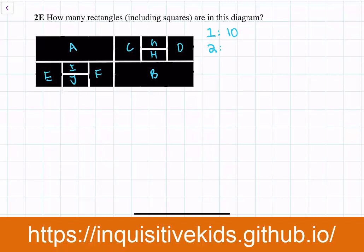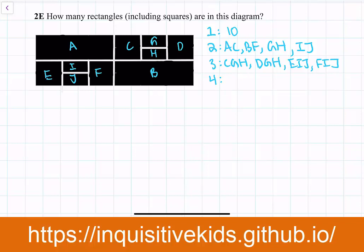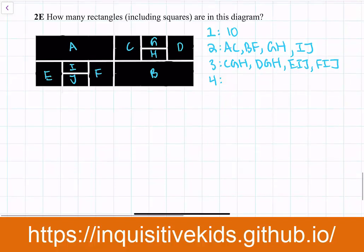How many rectangles are made up of two smaller rectangles? Here you would have: A-C, B-F, G-H, I-J — that's 8 such rectangles. How many rectangles are made up of three individual rectangles? We have C-G-H, D-G-H, E-I-J, and F-I-J — that's 4. How many rectangles are made up of four smaller rectangles? There are two that are purely horizontal: C-G-H-D and E-I-J-F. But there are also others like I-J-F-B and A-C-G-H — so that's 4 total rectangles made of four smaller ones.